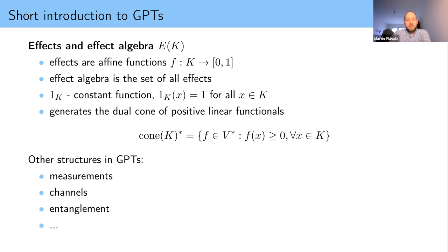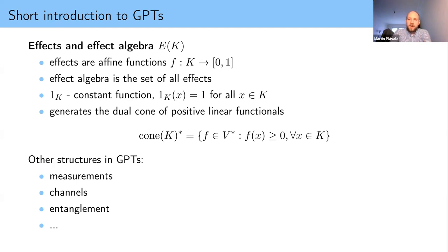Armed with this knowledge, you can start constructing more structures in GPTs: measurements, channels, entanglement, steering, Bell inequality violations — whatever you can do in quantum theory, we can most likely do in GPTs. There are some problematic parts, like entropy, because there's no uniquely defined entropy in all GPTs. In quantum theory it's fine, but in general it's not unique. Since this is a generalized framework, not everything is as smooth as possible.